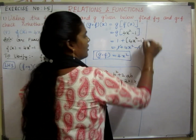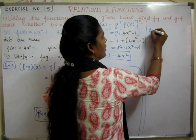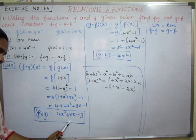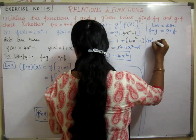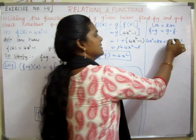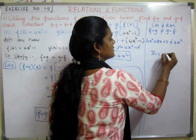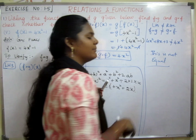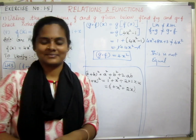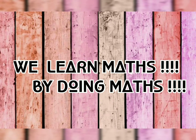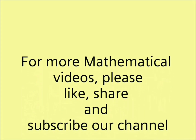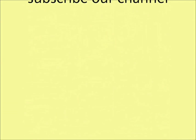Now verify: f∘g equals 4x squared plus 8x plus 3 on the left-hand side, and g∘f equals 4x squared on the right-hand side. These are not equal. Therefore f∘g is not equal to g∘f. That completes this problem. Please like, share, and subscribe. Thank you.